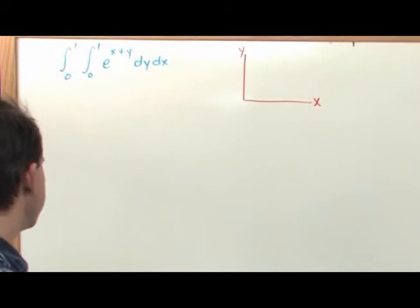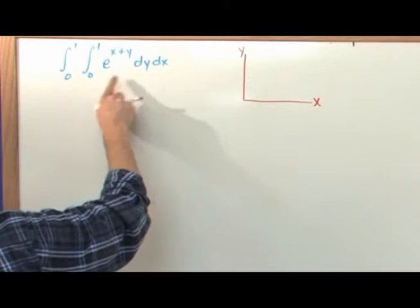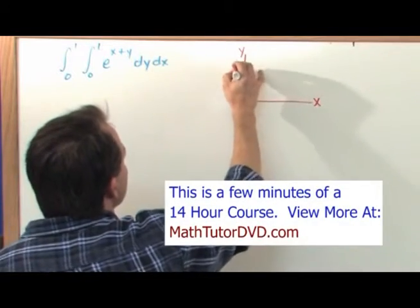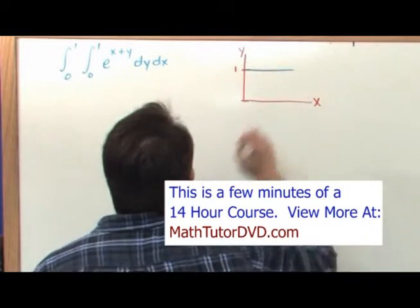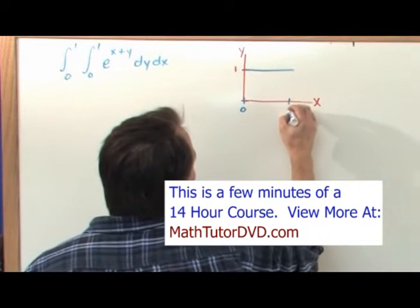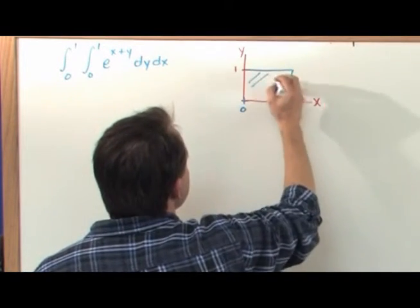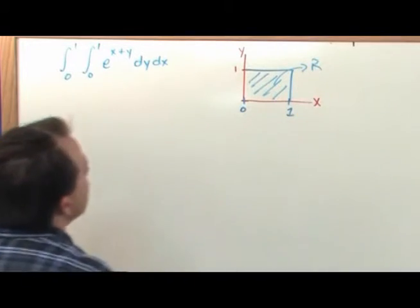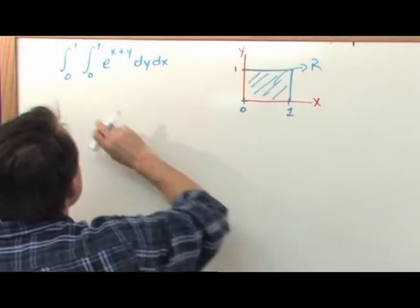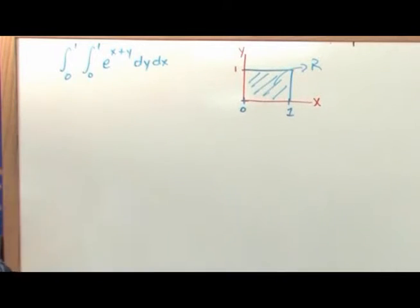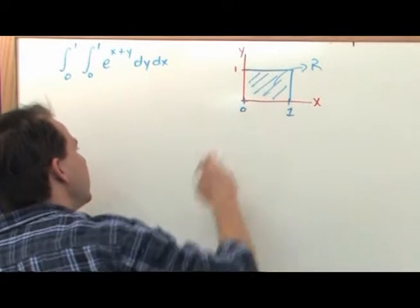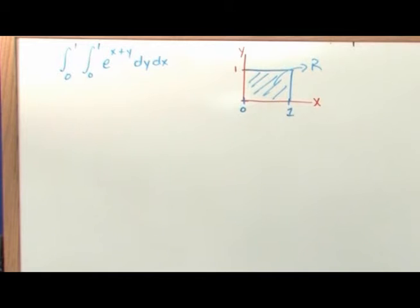So let's figure out what that looks like. You're integrating along y first from 0 to 1. Y equals 0 is just a horizontal line, y equals 1 is another horizontal line, and along x you're integrating from 0 to 1. So this is your region R — a square. You're evaluating this function, integrating it, and adding up all those little skyscrapers over the region R.